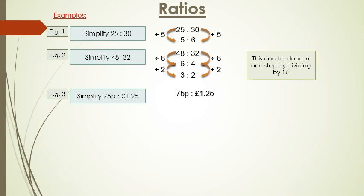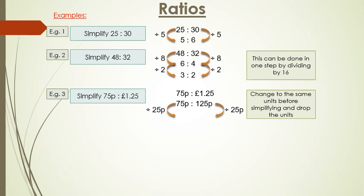Then you have 75 pence over 1 pound 25. Change to the same units before simplifying and drop the units. So 75 and 125. Instead of saying 1 pound 25 change it into pence, 125 pence. Well we know that 75 divided by 25 pence is 3 and 125 divided by 25 pence is 5. So 3 to 5.